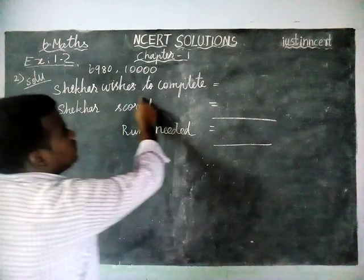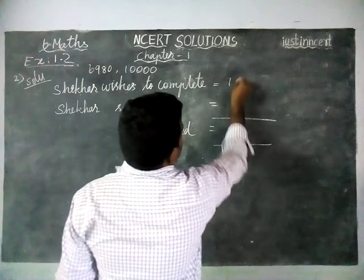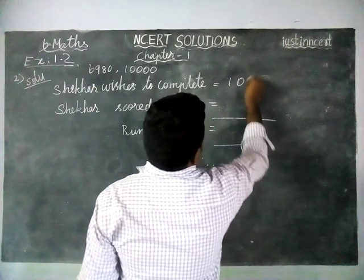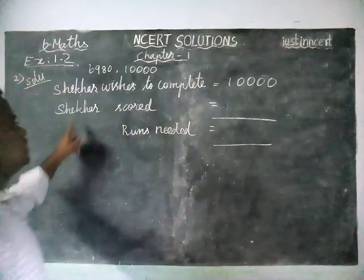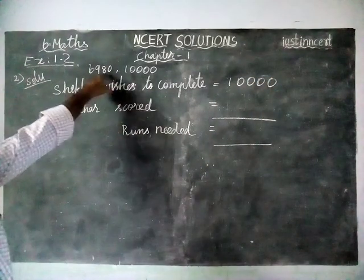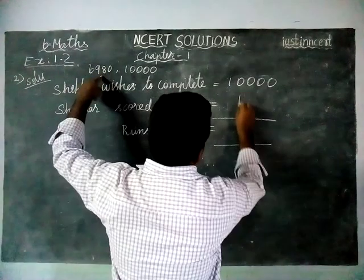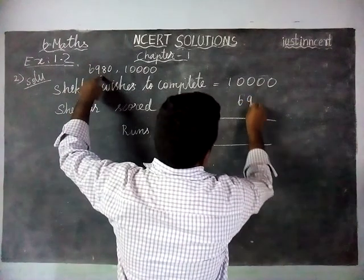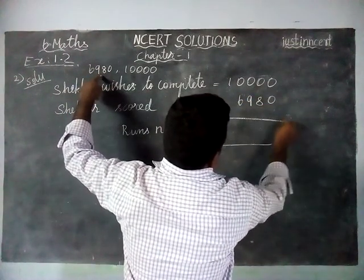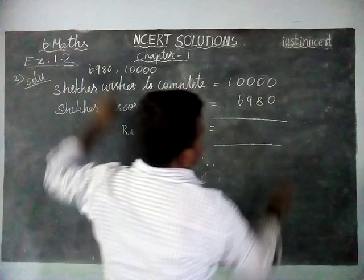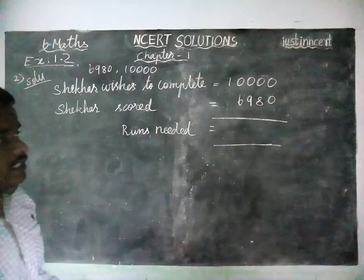Sagar wishes to complete 10,000. Then, Sagar has scored 6,980 till now. We have to find the difference.